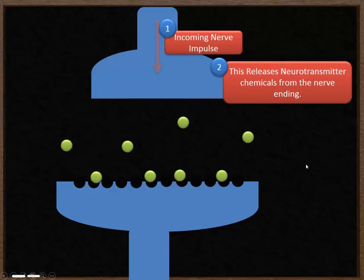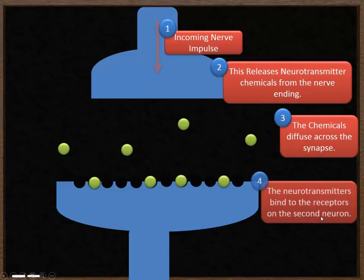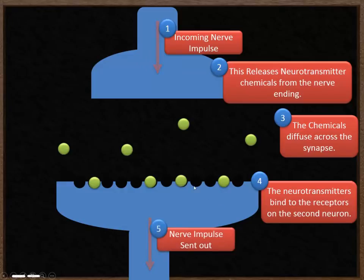The neurotransmitters diffuse across the synapse. That word diffuse is important. Some of those neurotransmitters bind onto the second neuron, and upon binding to the second neuron, they cause a nerve impulse to be sent out. That allows the nerve impulse to be transferred from the first neuron to the second neuron.